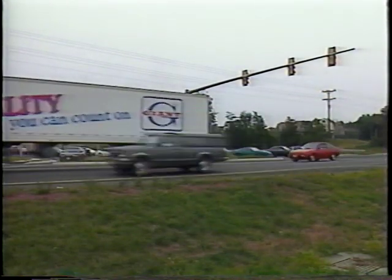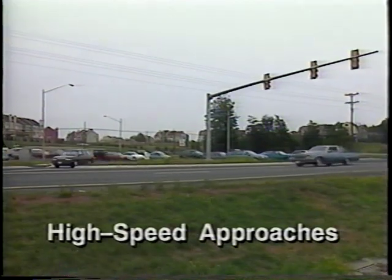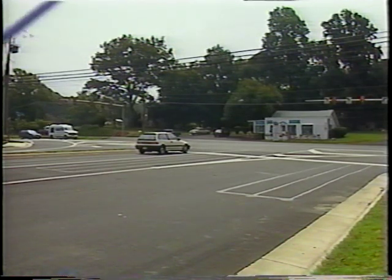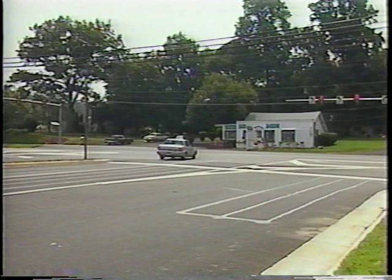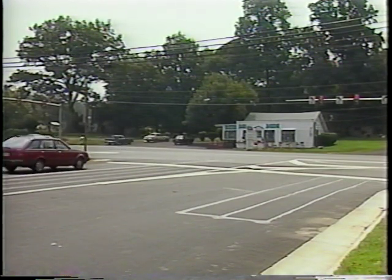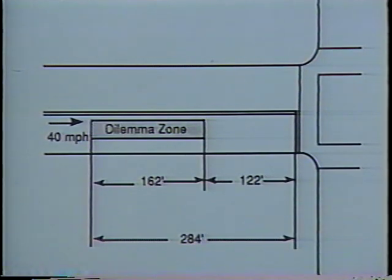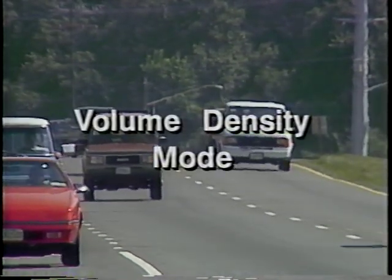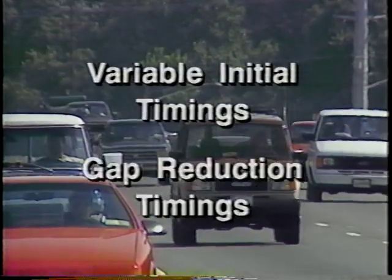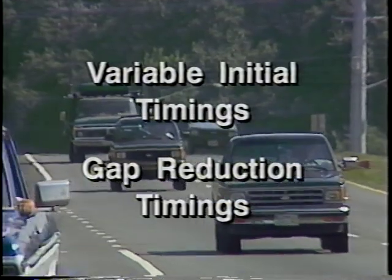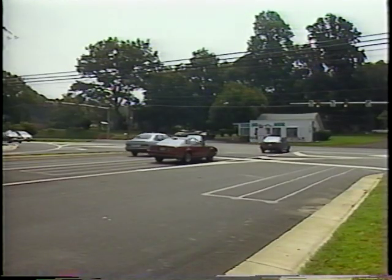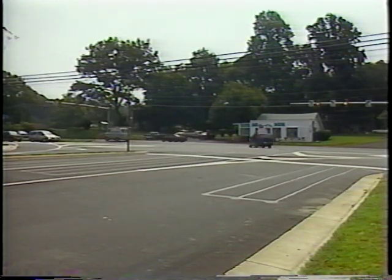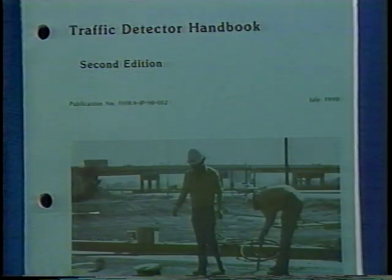There are a number of specific problems associated with high speed approaches. For example, at a yellow light, some drivers going over 35 miles per hour might brake suddenly, causing a rear-end collision; others might speed up and cause an accident within the intersection. There are, however, a number of techniques available to avoid creating a dilemma zone of driver indecision during yellow signals. The most conventional technique for a high speed approach uses a controller with a volume density mode. This type of actuated operation offers variable initial timings and gap reduction timings to accommodate the increased traffic, taking into account the waiting vehicles behind the first one in line, as well as the wait time of vehicles on a conflicting phase. Consult your handbook for further design possibilities.